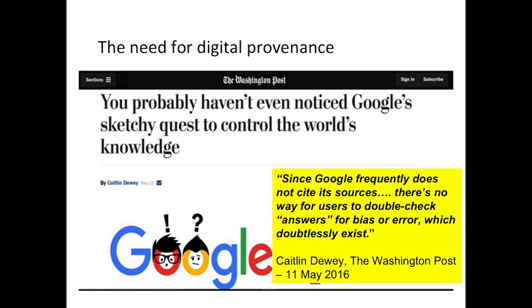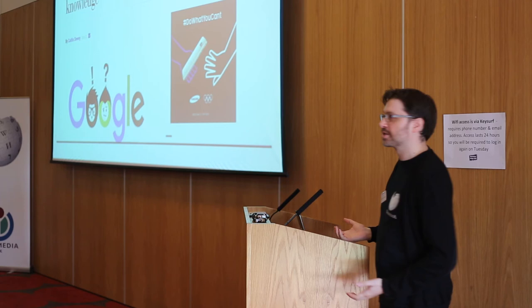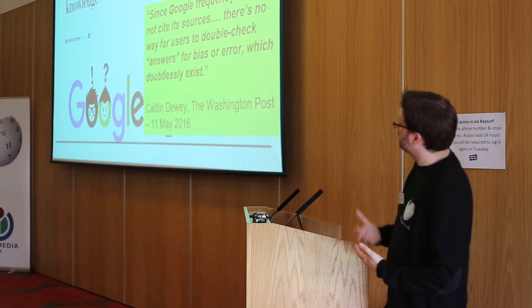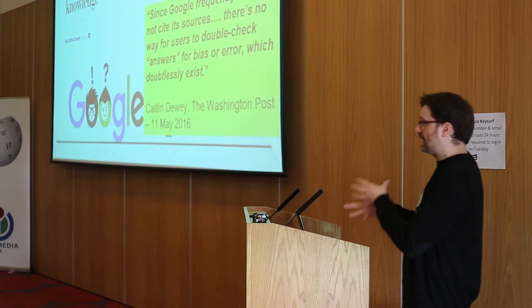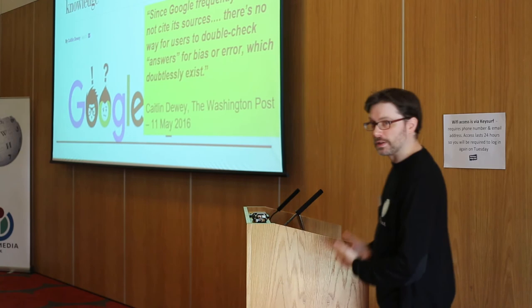There is a need to provide digital provenance in an age of information explosion. Since Google frequently does not cite its sources, there's no way for users to double check answers for bias or error, which doubtlessly exist. In terms of digital provenance, Wikidata is well placed to be that central hub.